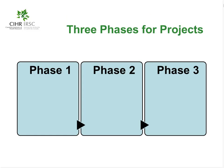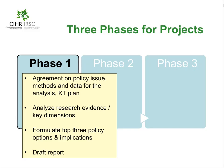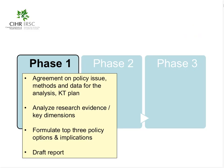There are three distinct phases that are part of the policy analysis project supported through this funding opportunity. Applications submitted must document the plans within each of the phases and this will be assessed as part of the review process. In phase one, there is an explicit agreement between the researcher and the policy maker that clearly outlines the agreed-upon policy issue for analysis, the methods and data that will be used to undertake the analysis, and the knowledge exchange and dissemination plan. Also in this phase, the research evidence on the issue is analyzed as well as key economic, political, cultural and social dimensions.